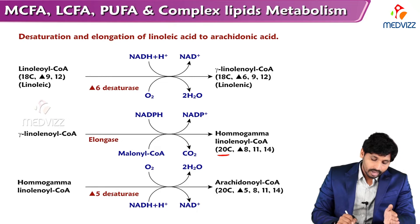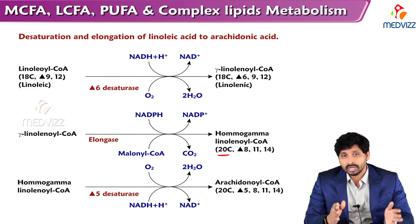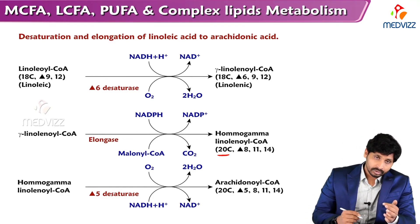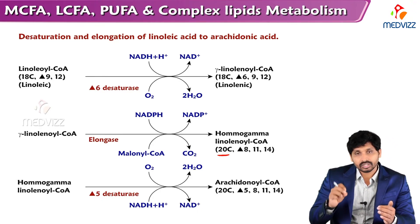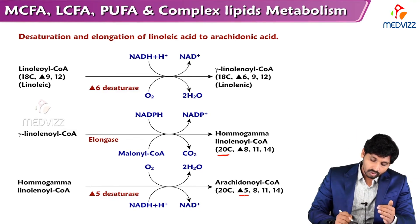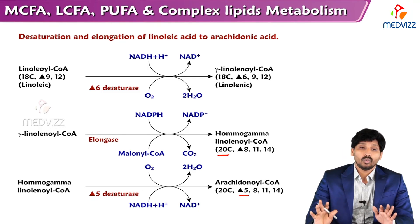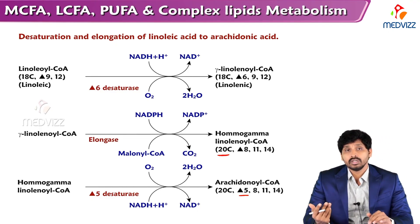Homo-gamma-linolenic acid is a 20-carbon compound formed by elongation — addition of 2 carbons from malonyl CoA (a 3-carbon compound, with 1 carbon removed as CO2) to linolenic acid, giving a 20-carbon intermediate. This undergoes further desaturation with insertion of a double bond at the 5th carbon, with molecular O2 involved (forming water) and NADH also required. The final product is arachidonic acid — a 20-carbon compound with 4 double bonds.